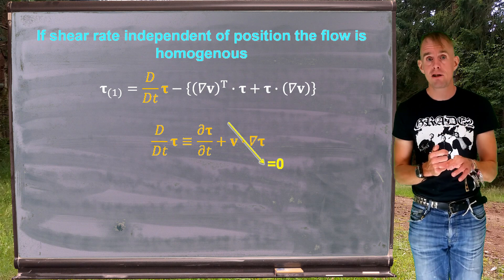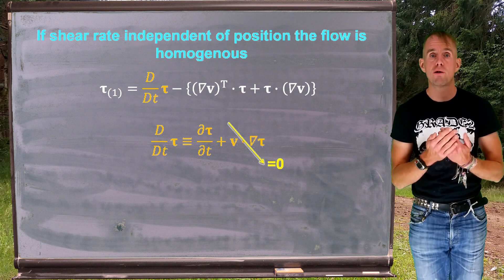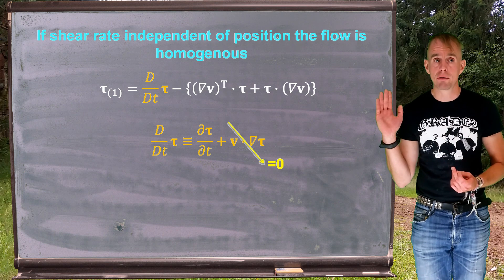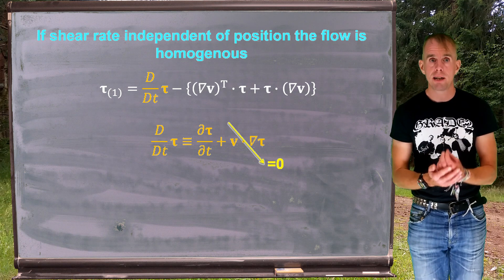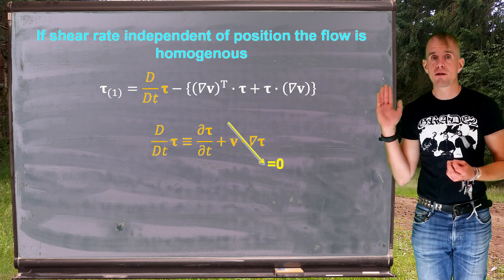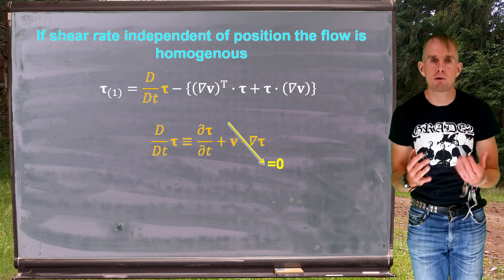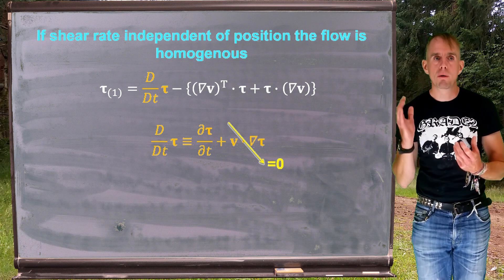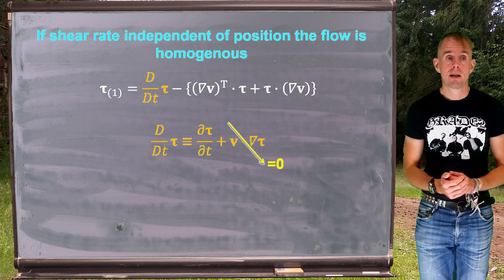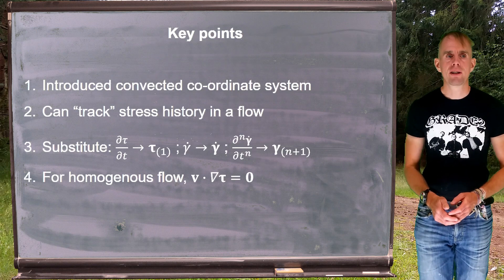We're not going to prove this, but it can be shown that if your shear rate in a flow is independent of position, then v dot grad tau equals zero. We call this homogeneous flow, and all the flow scenarios we're going to look at for this course will be homogenous. So, v dot grad tau equals zero for a homogenous flow.